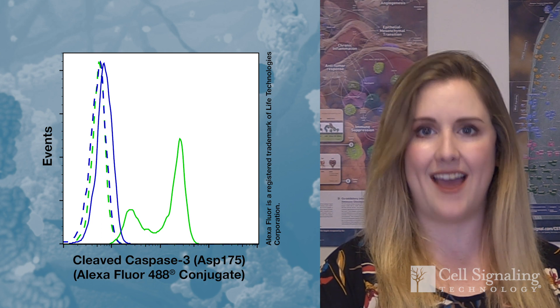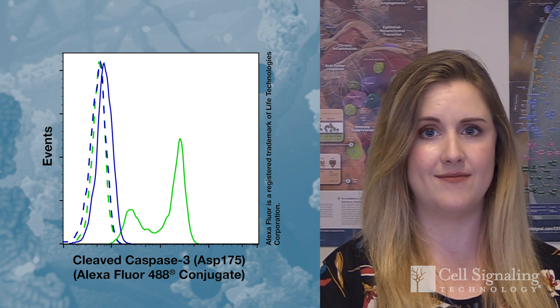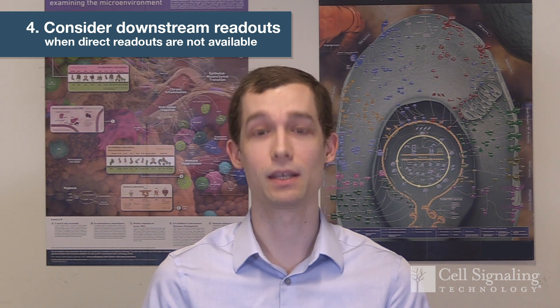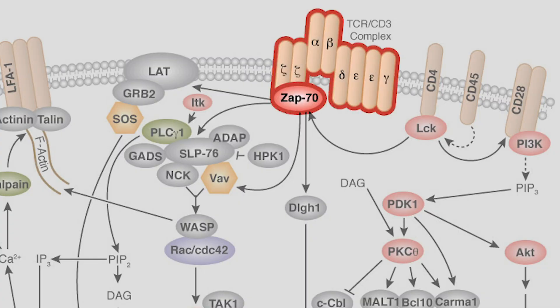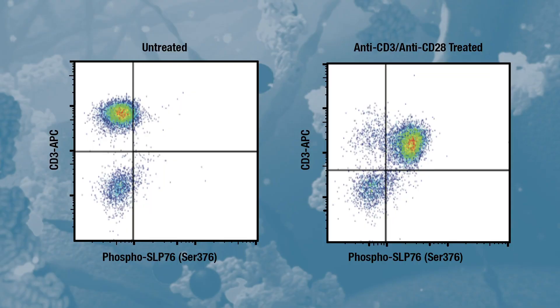Once again, timing is crucial. Number four, if an antibody to your protein of interest isn't available to provide a direct readout, you can consider choosing a downstream node in that signaling cascade to use as an indirect readout of that pathway. Remember to look for antibodies and antibody conjugates that have been validated specifically for flow cytometry.